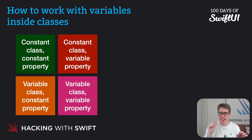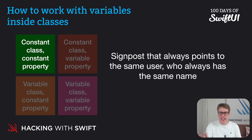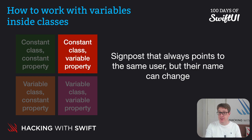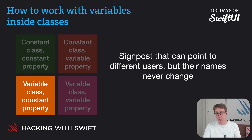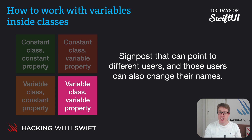And each of these work subtly differently. A constant class with a constant property is a signpost that's fixed — always pointing to the same user who always has the same name. A constant class with a variable property means the signpost is fixed pointing to the same user, but they can change their name. A variable class with a constant property means the signpost can move around and point to different people, but their names never change. And finally, a variable class with variable properties means the signpost can move to different users, and those users can all change their names.